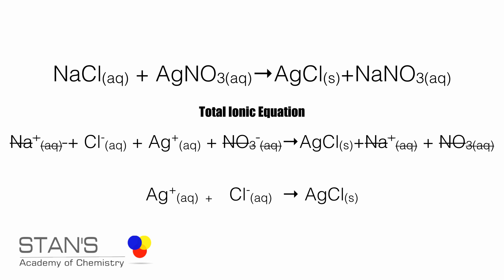The second equation is called total ionic equation. And the third equation is called net ionic equation. Those crossed out ions are called spectator ions because they do not form a precipitate. This is how you write total ionic equations and net ionic equations.